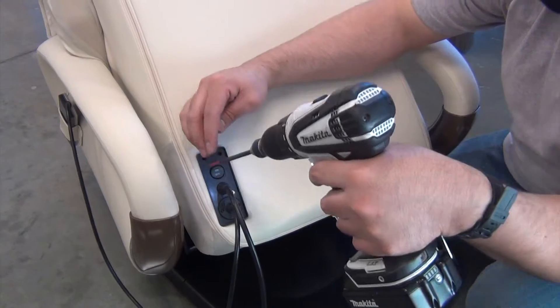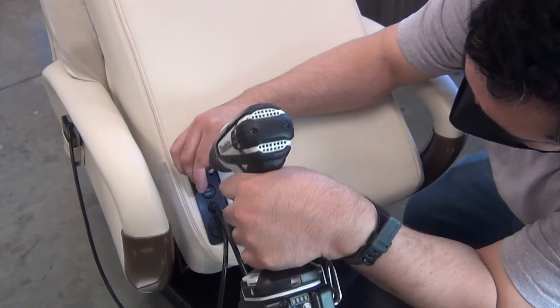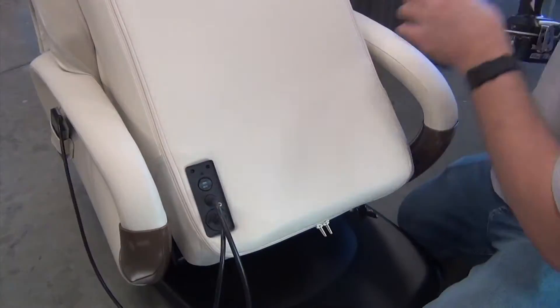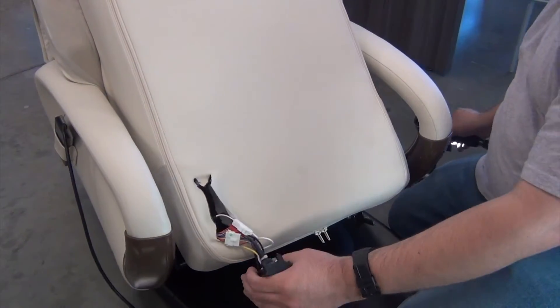Next, loosen or remove the two screws from the top of the power panel. Pull the power panel out of the backrest, then unzip the backrest upholstery.